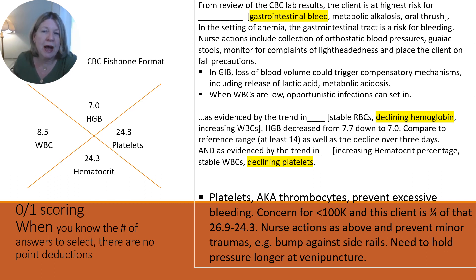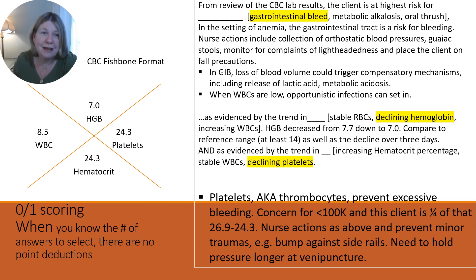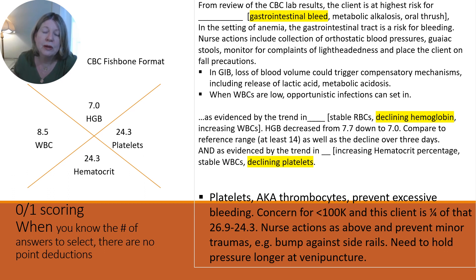That would be metabolic acidosis, not the answer option of metabolic alkalosis. When white blood cells are low, opportunistic infections can set in. As evidenced by the trend in declining hemoglobin — hemoglobin decreased from 7.7 down to 7.0, compared to the reference range of at least 14 for a male — that decline over three days supports declining hemoglobin as an issue. And as evidenced by the trend in declining platelets for the same reason.